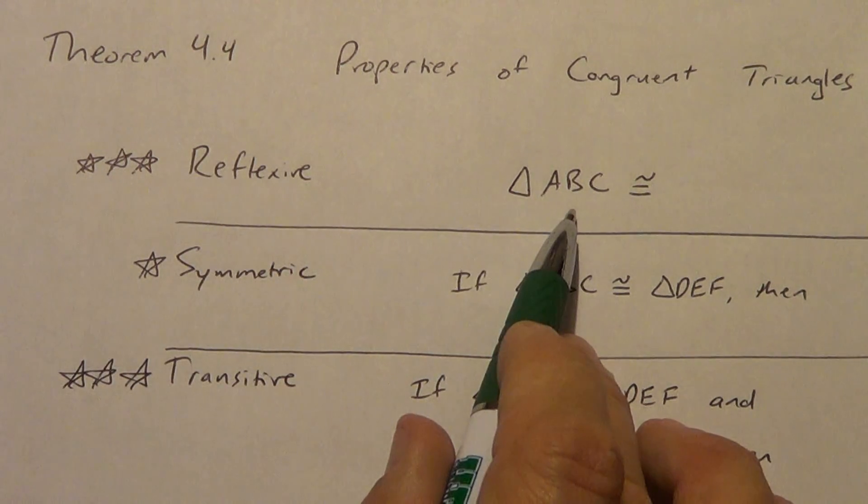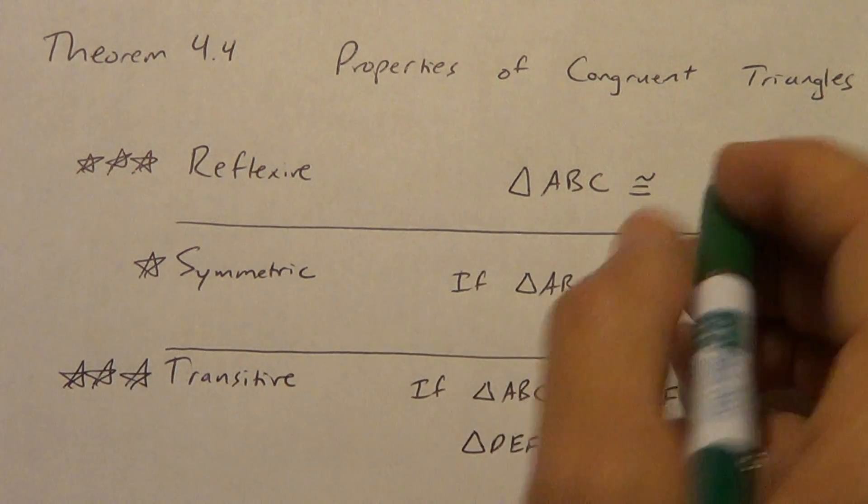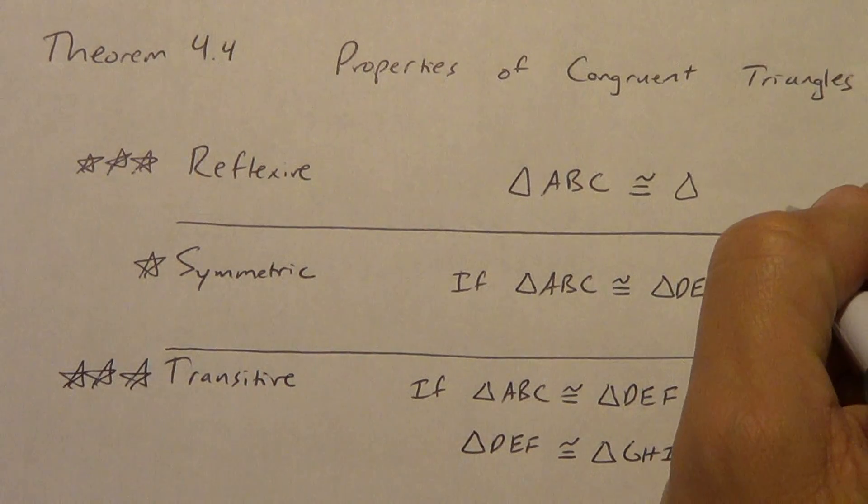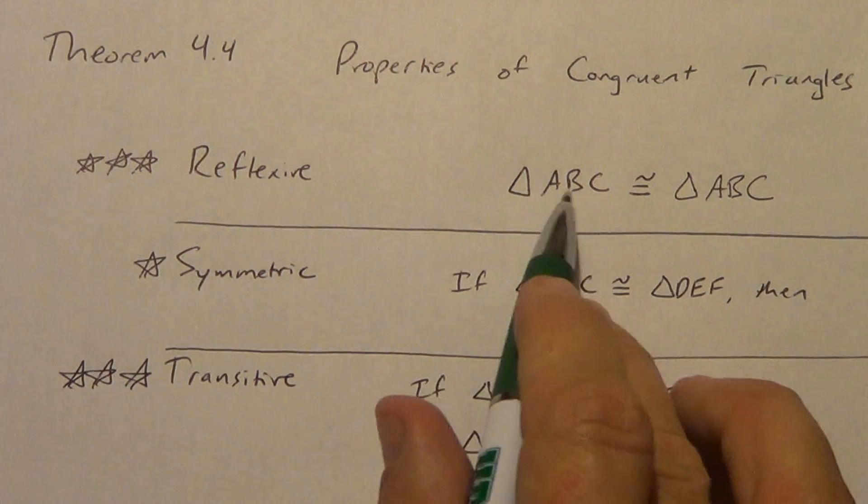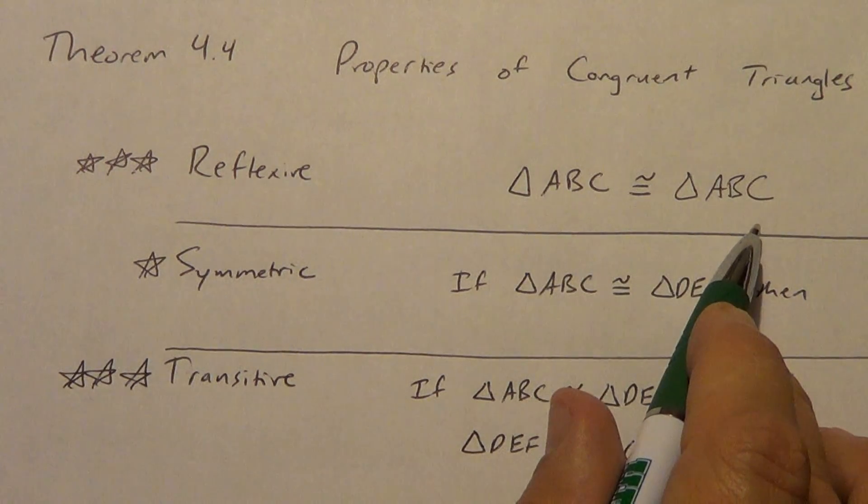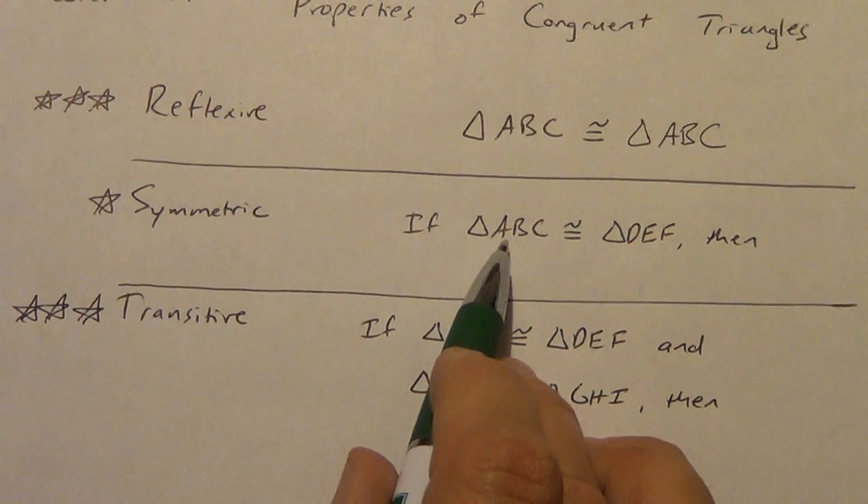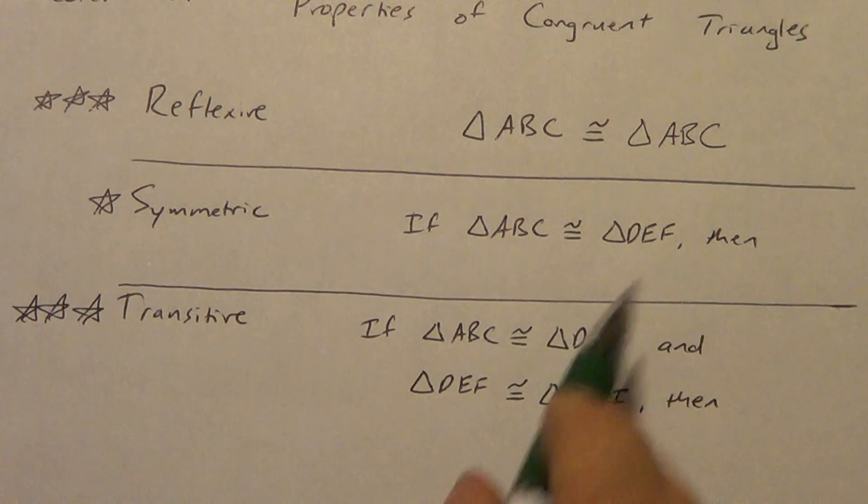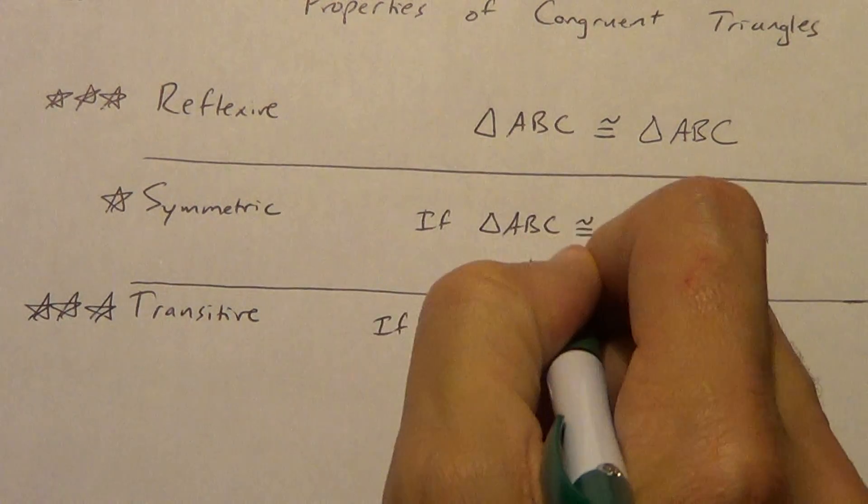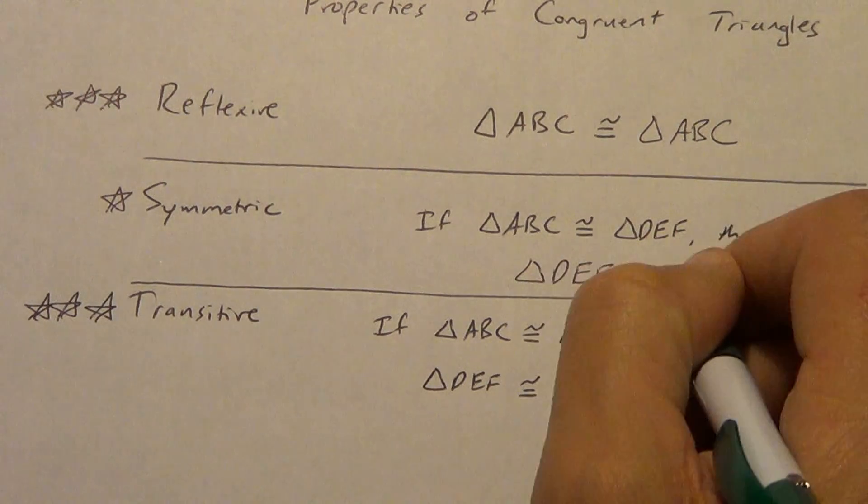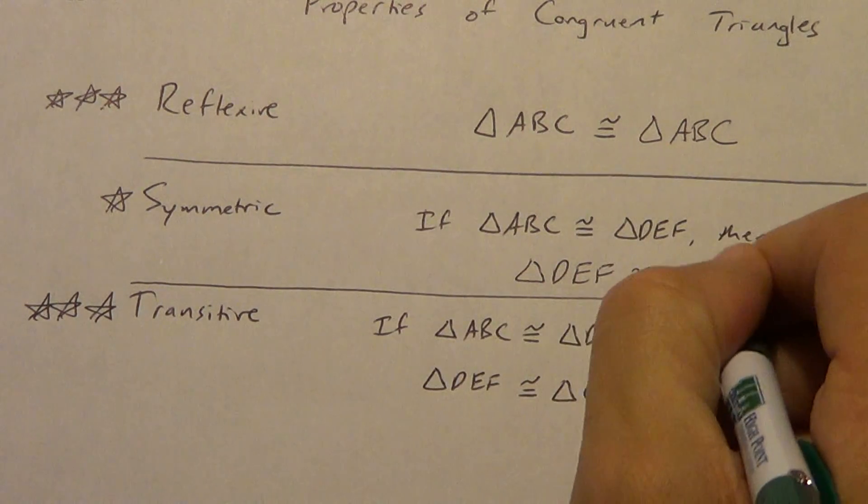Reflexive. That means a triangle is always congruent to itself. So triangle ABC is congruent to triangle ABC. You cannot change the order. Remember, order of triangles is important. We talked about that in the first video for Lesson 4.2. Symmetric. If triangle ABC is congruent to triangle DEF, then, remember, symmetric meant we could flip the order around. So triangle DEF. Notice we're not flipping the order of the triangle. We're just flipping the left and right side of the congruent sign. Triangle ABC.